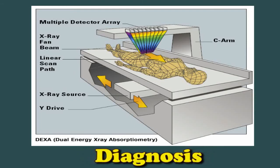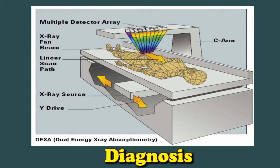Two types of devices can carry out a DEXA scan. A central device is a hospital-based scan that measures hip and spine bone mineral density while the individual lies on a table. A peripheral device is a mobile machine that tests bone in the wrist, heel, or finger.